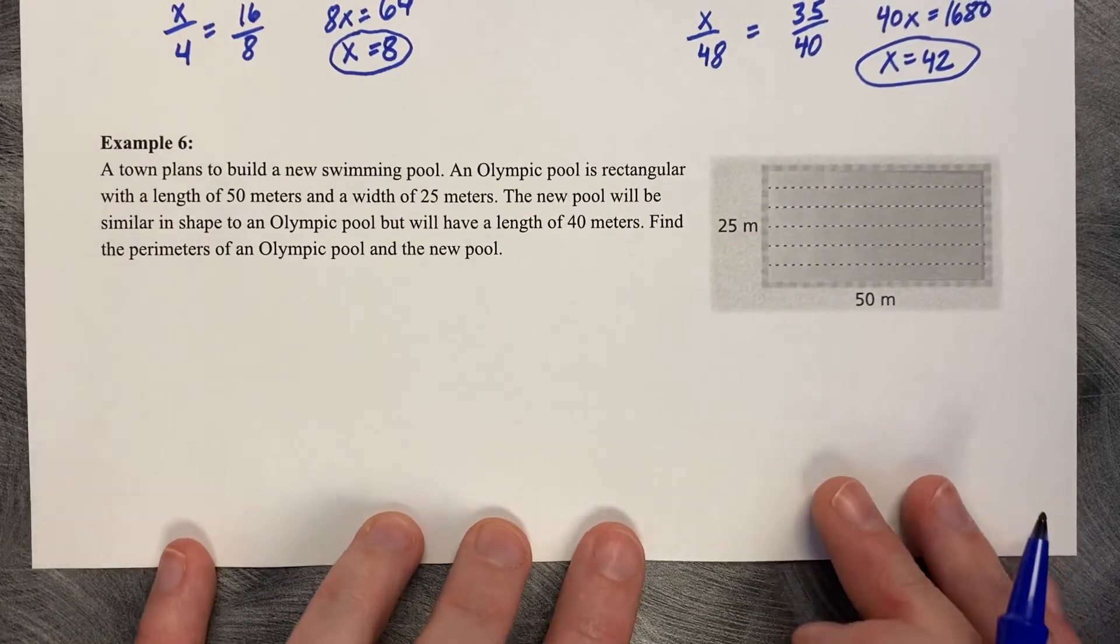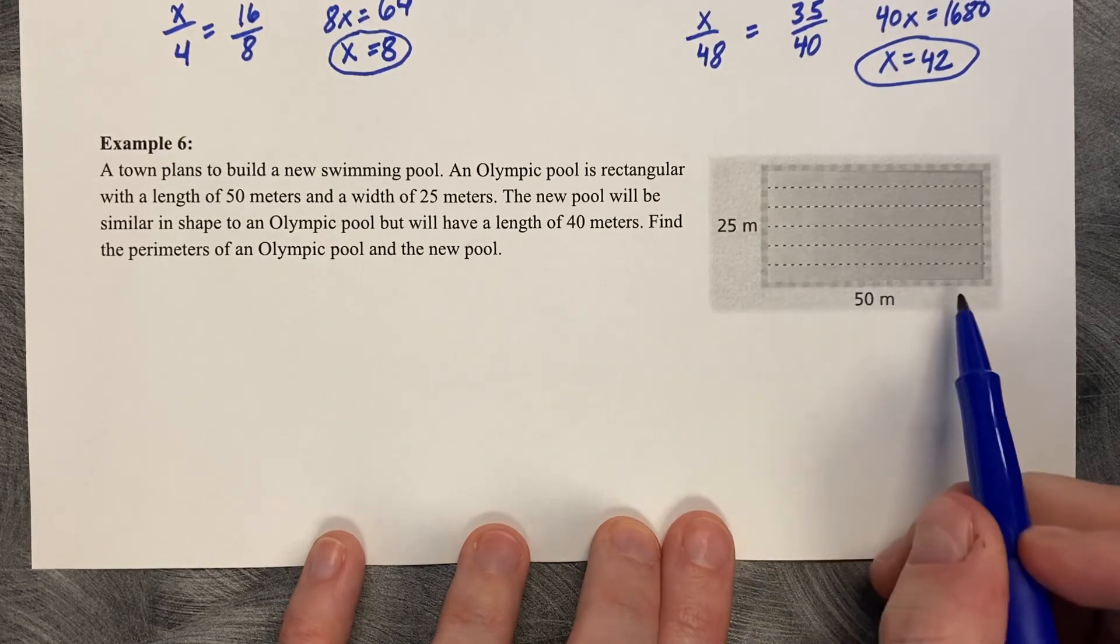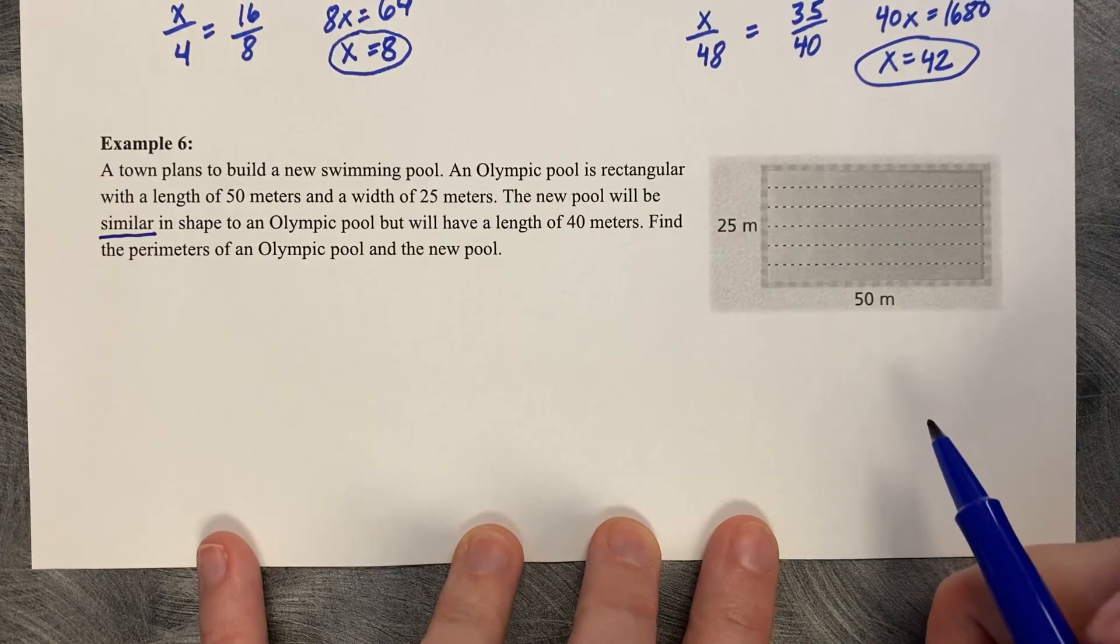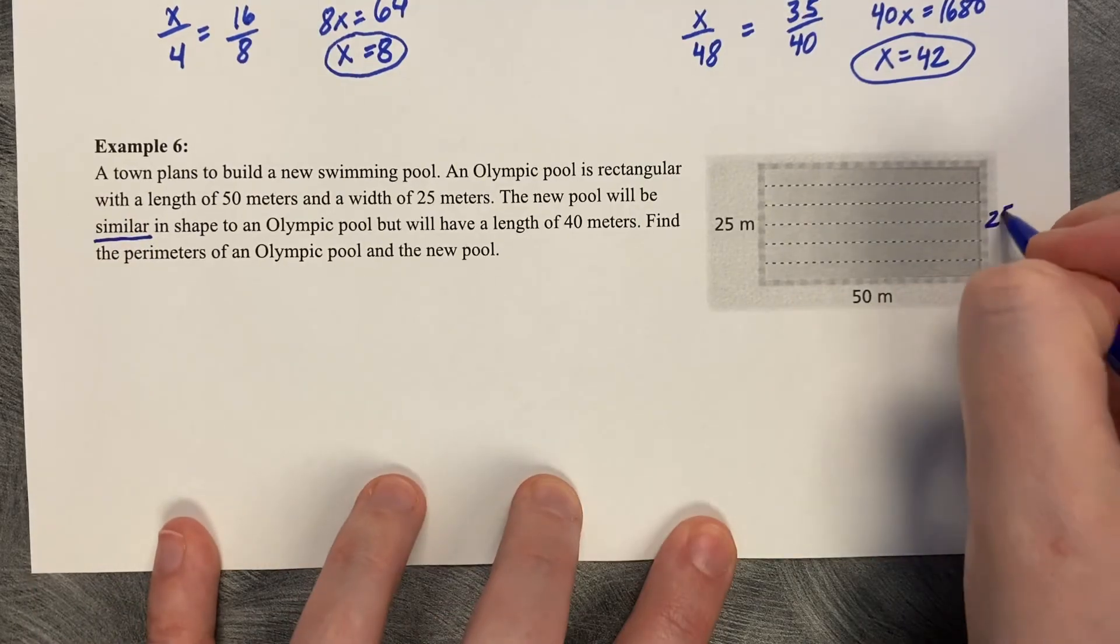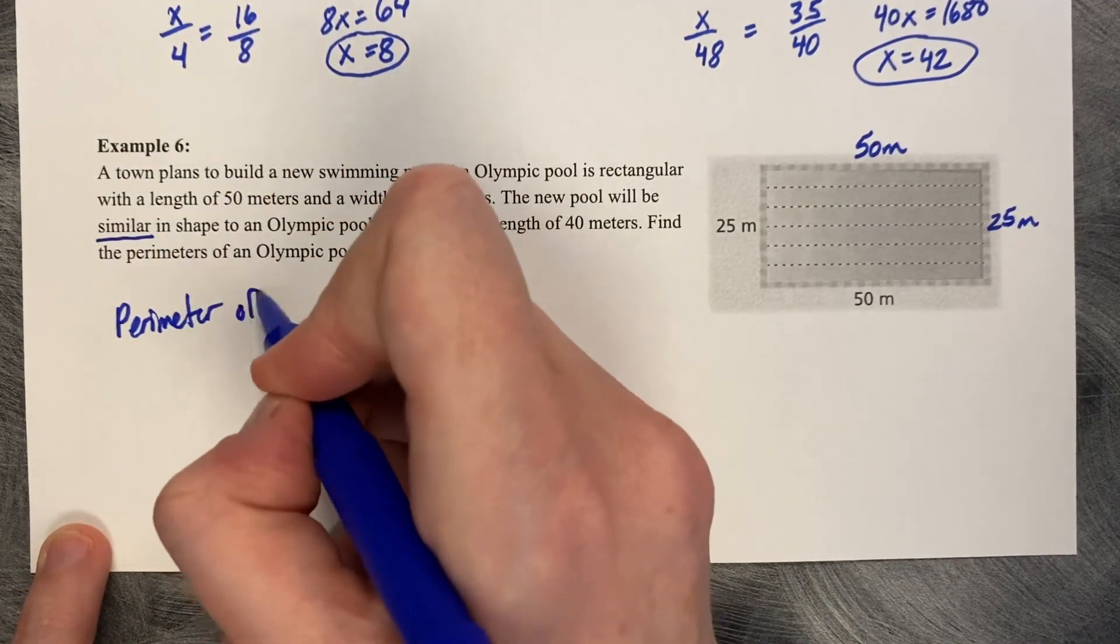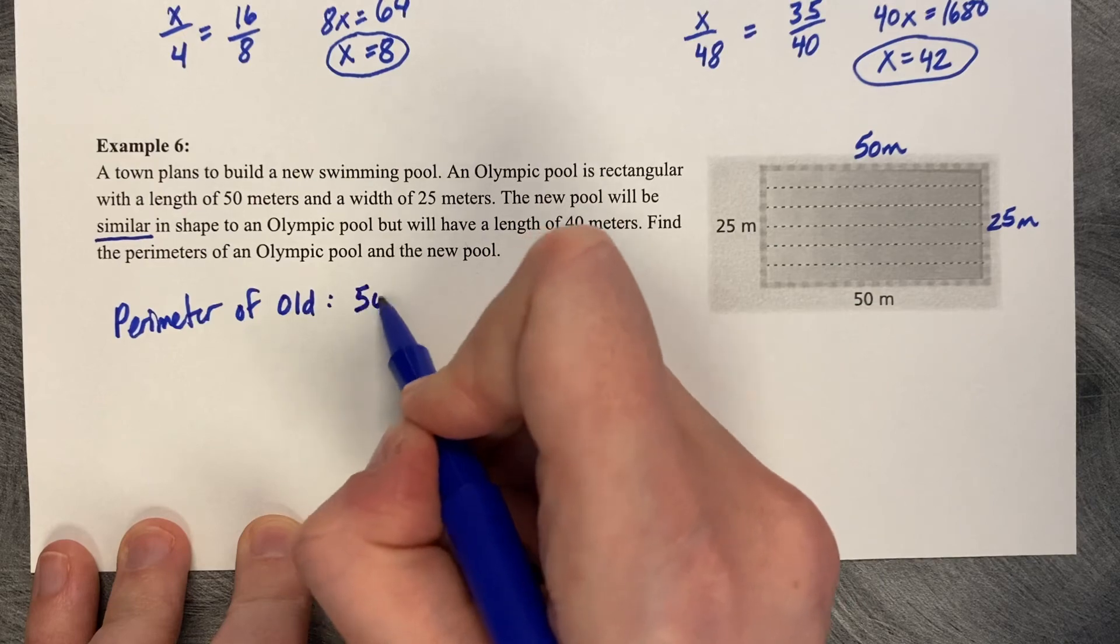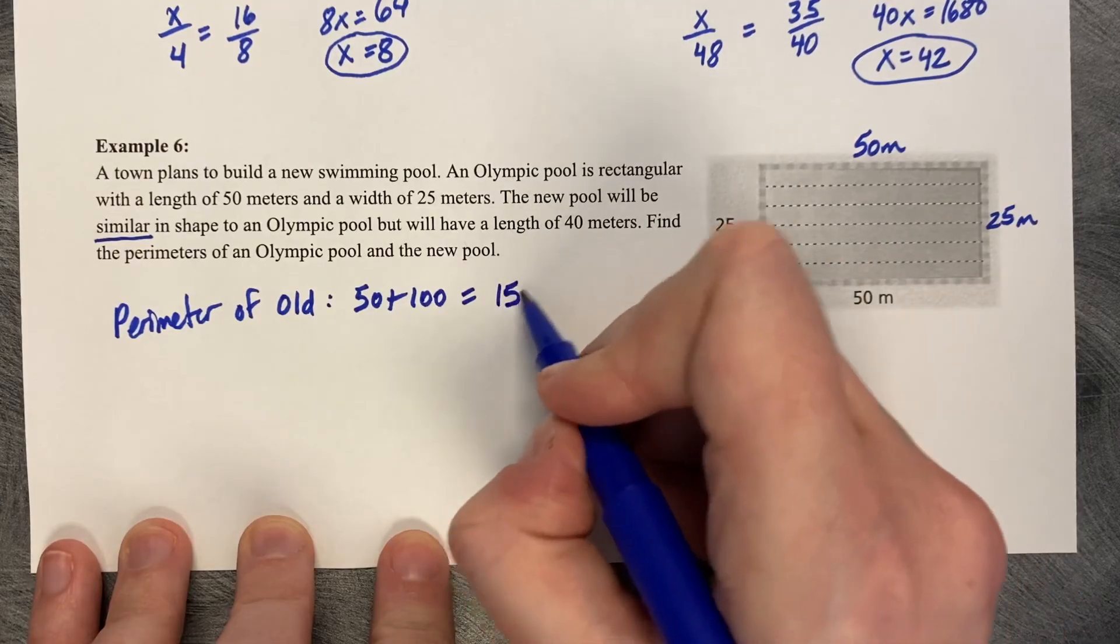Our last example. A town plans to build a new swimming pool. An Olympic pool is rectangular with a length of 50 meters and a width of 25 meters. The new pool will be similar in shape but will have a length of 40 meters. Find the perimeter of an Olympic pool and a new pool. So we can do the Olympic pool right away. I know this is 25 meters and this is 50 meters. So the perimeter of old, 25 and 25 is 50, 50 and 50 is 100. So our old perimeter is 150 meters.